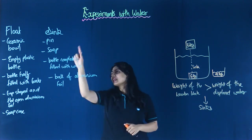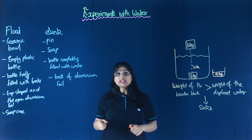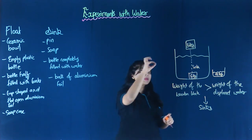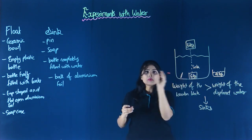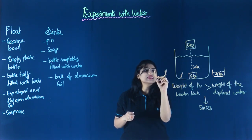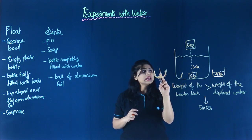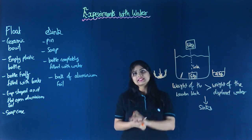So which are the substances that sink? Pin, soap, bottle completely filled with water, ball of aluminium foil. What has happened in these cases: when the small pin goes inside, it displaces only a little amount of water. The weight of this displaced water is less than the weight of the pin, due to which the pin sinks inside.